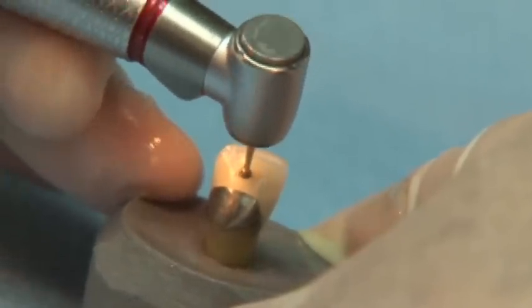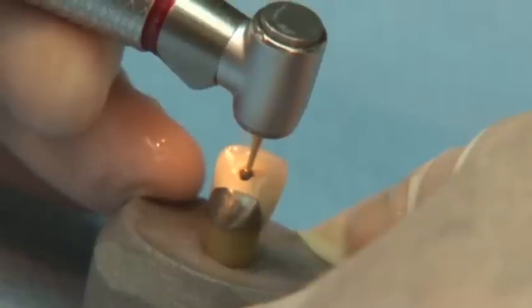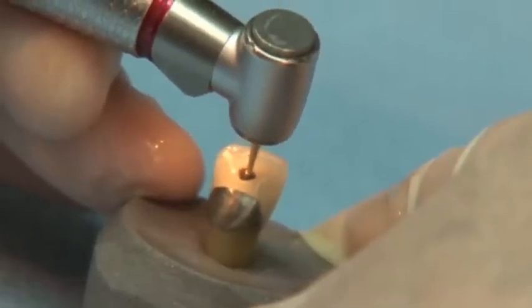Look at how smoothly and efficiently the Great White number 6 round burr goes through both the porcelain and metal of this failed crown.